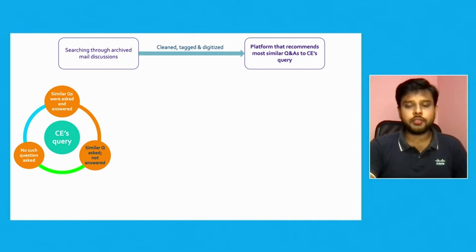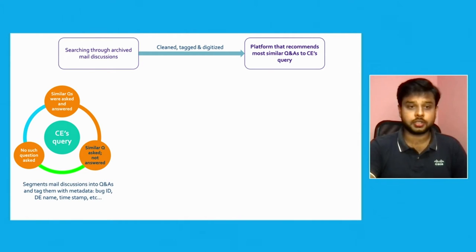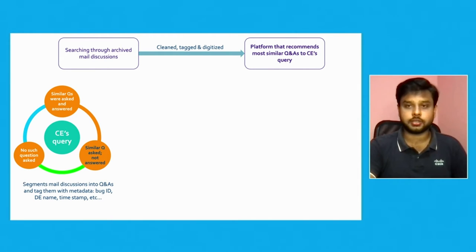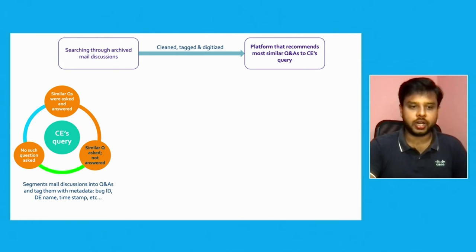How is the data stored internally in the database? All email communications are processed, and questions and answers are tagged together. Questions that have answers go into Bucket 1. Questions that were asked but never answered go into Bucket 2 — unanswered questions. Bucket 3 is for queries that have never been asked at all — brand new questions with no prior discussion.